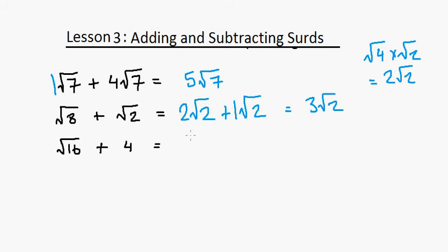Now this √16 + 4, I don't actually know why I added this one, because this is a perfect square. It'll just be 4 plus 4 equals 8. But anyway it was in there, so I decided to do it.